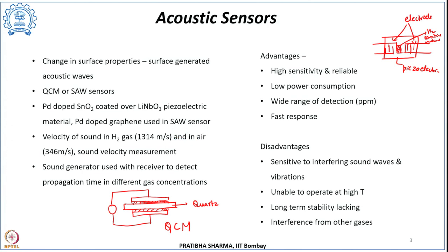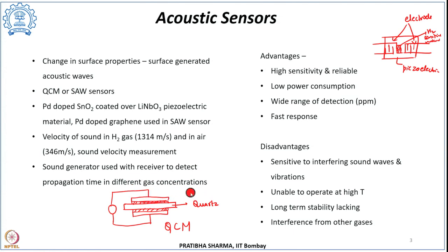Another acoustic sensing method uses the fact that the velocity of sound in hydrogen is much higher than in air — 1314 m/s in hydrogen versus 346 m/s in air. This difference can be used to measure hydrogen concentration. A sound generator and receiver are used, and the time it takes for sound to propagate at different gas concentrations is measured. This propagation time is calibrated against gas concentration to detect hydrogen.